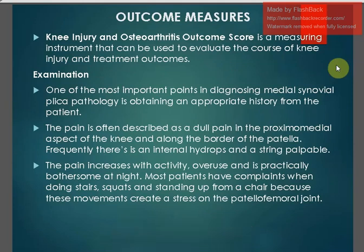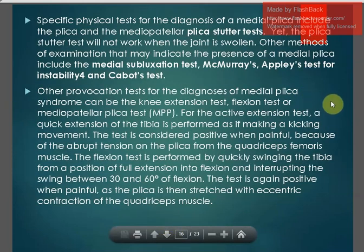The Knee Injury and Osteoarthritis Outcome Score (KOOS) is one of the outcome measures used. In examination, one of the most important points in diagnosing medial synovial plica pathology is obtaining an appropriate history from the patient. Pain is often described as a dull pain in the proximal medial aspect of the knee and around the border of the patella. Frequently there is an internal ridge or a string-like palpable band. The pain increases with activity and overuse, and is particularly bothersome at night. Patients may have complaints when coming down stairs, doing squats, and standing up from a chair, as these movements create stress on the patellofemoral joint.